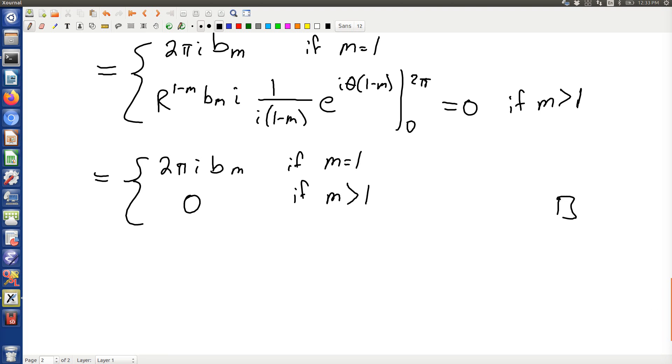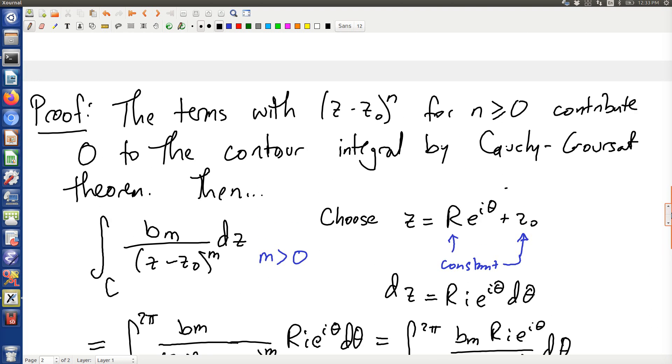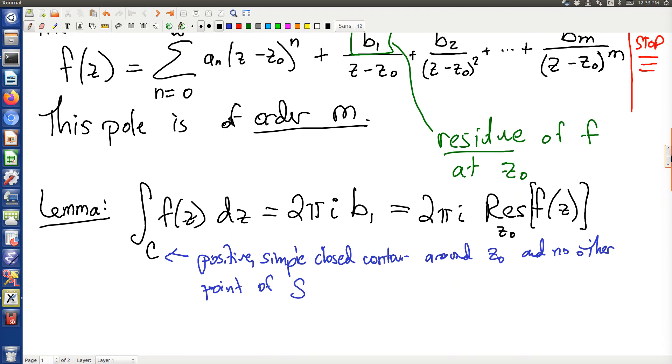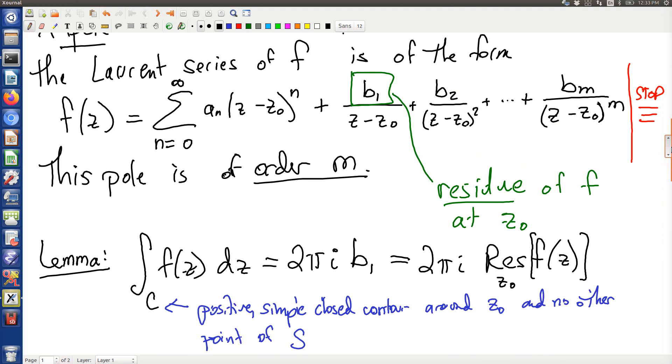The conclusion is just what we asked for: 2πi bₘ if m equals 1, or 0 if m is greater than 1. Just as desired. What that means is that this lemma here is true, and this is why b₁ holds a special place. It's called the residue at z₀.